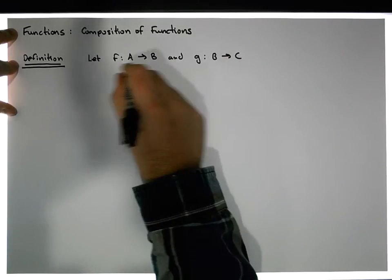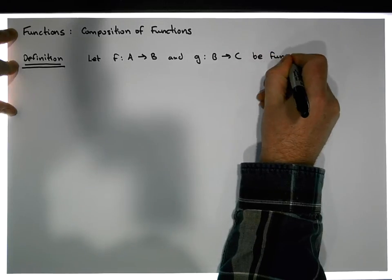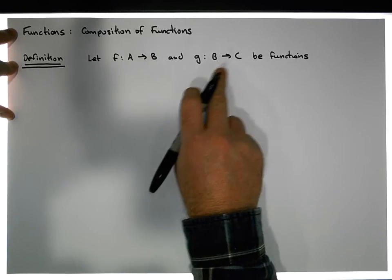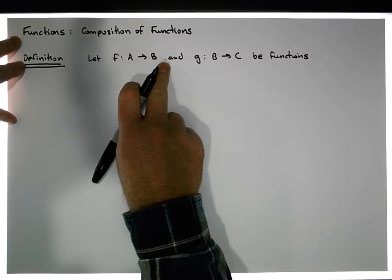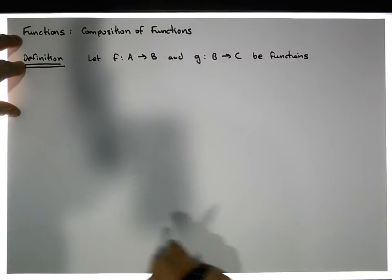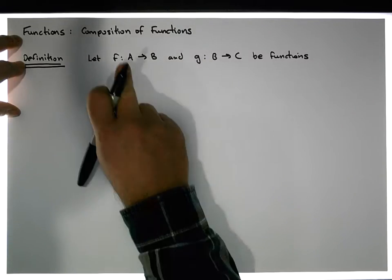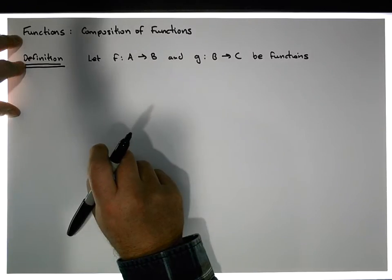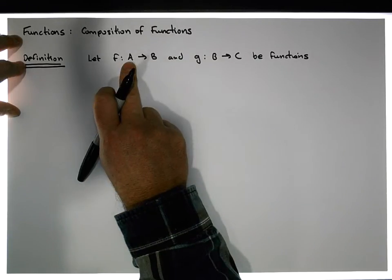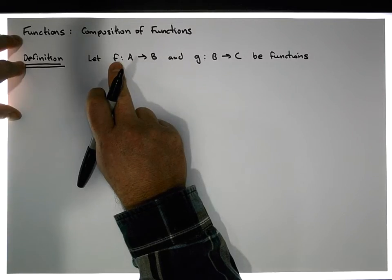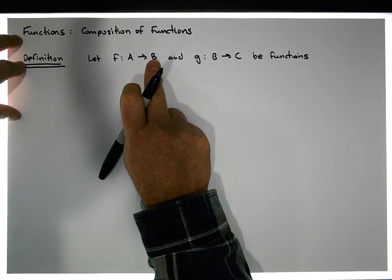Let them be functions — so they're not just relations or just mappings, they're actually functions. With respect to f, every single value in A is taken to some value in B — that's the first condition. The second condition is that if we choose two different values in A and apply the mapping, they must be taken to two separate values in B.